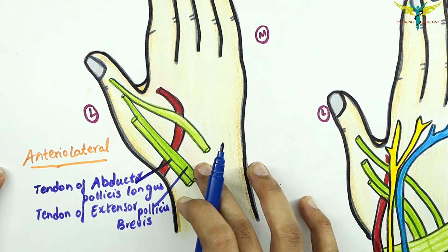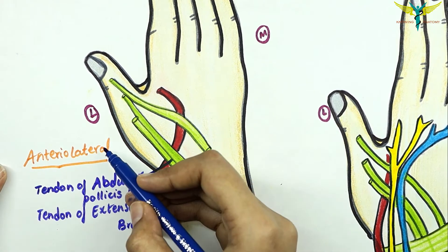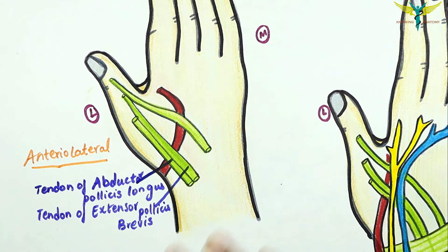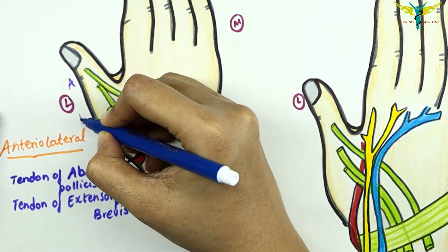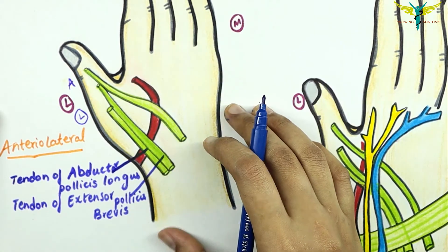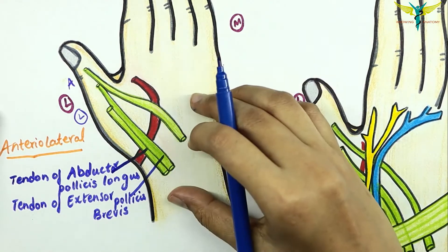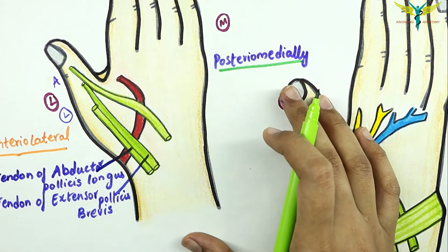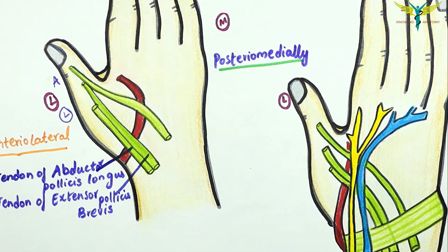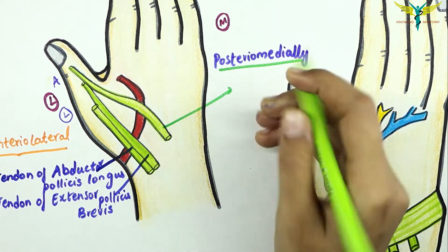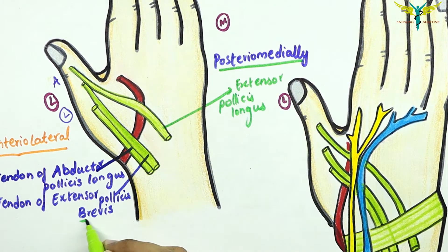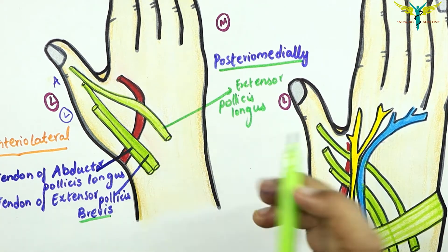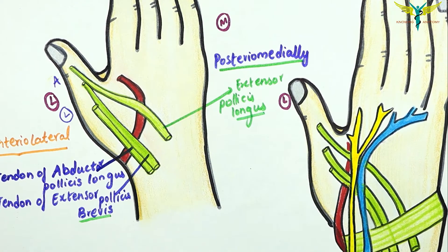The anterior and lateral relations are finished. Now the posterior medial boundary of the anatomical snuff box is formed by the tendon of the extensor pollicis longus. Here, the brevis is finished, so you should remember that the longus comes into action for the posterior medial boundary.